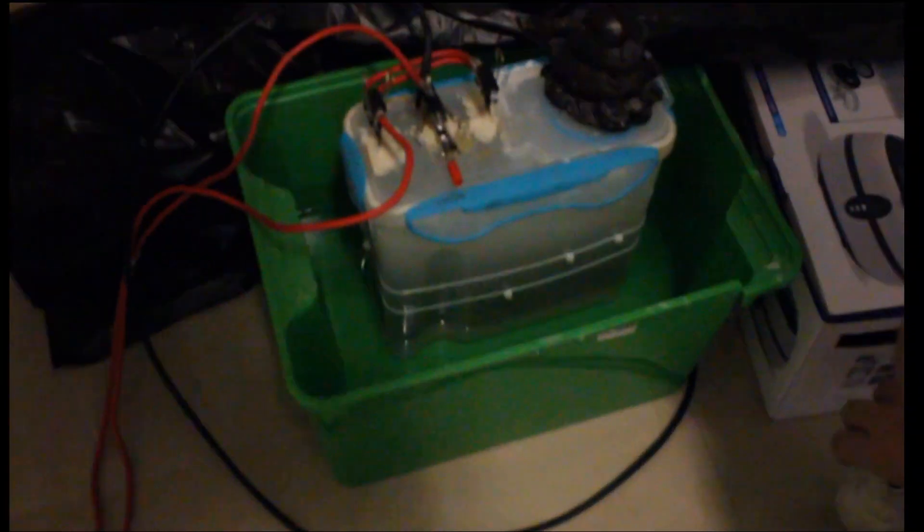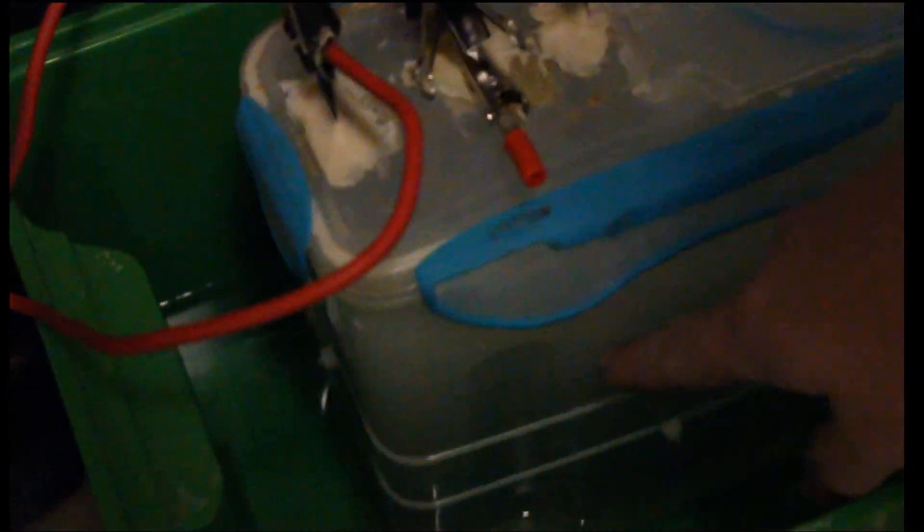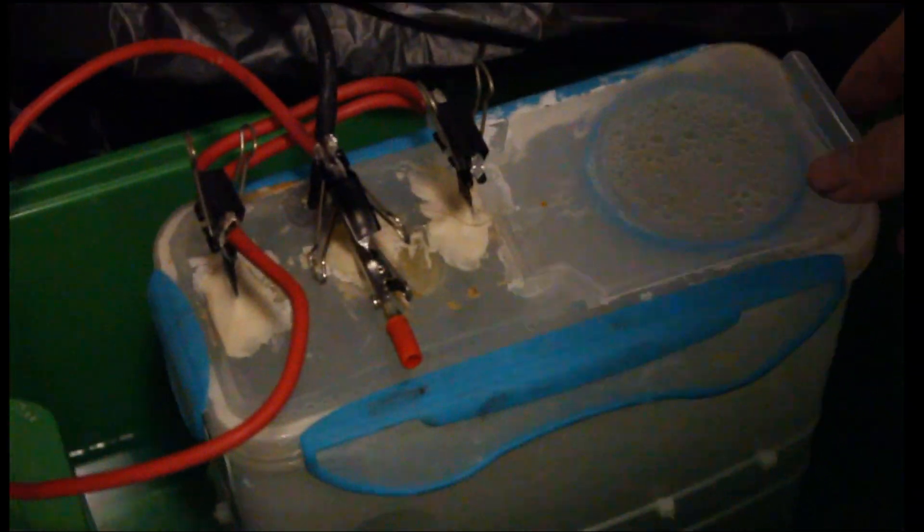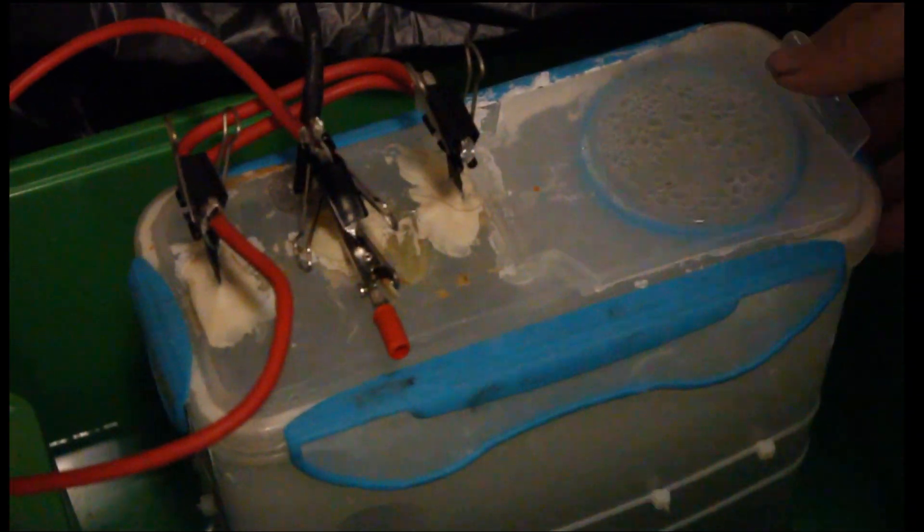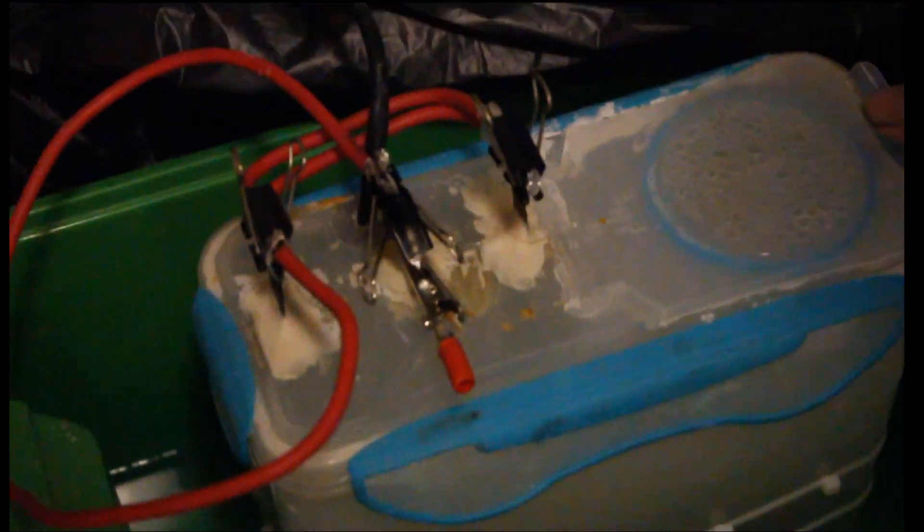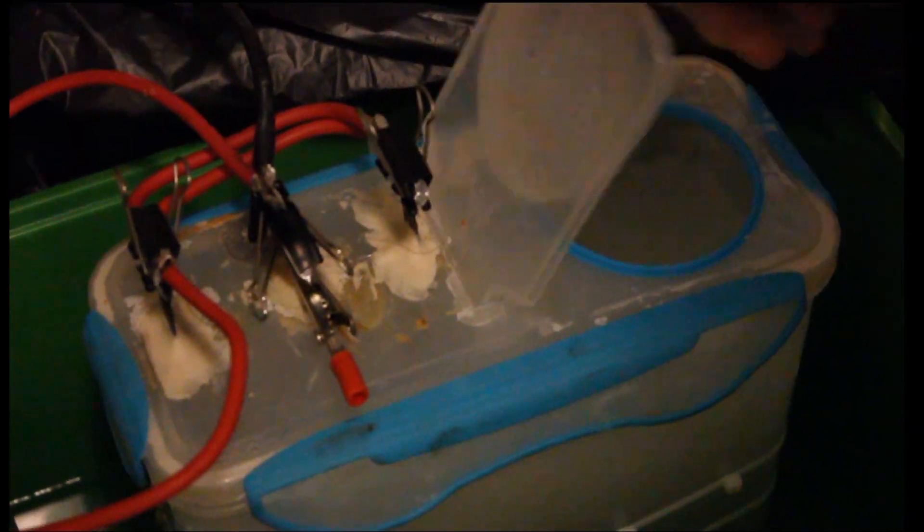Now calcium chloride does two things. It builds up on the cathode which creates some sort of a diaphragm. It looks like this horrible white thing which I'll show you later, but that's good for us. Another thing it also does is it keeps the pH really low.